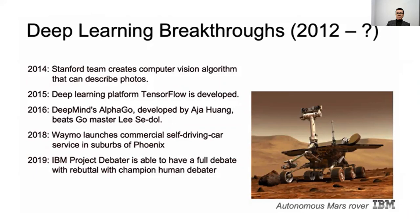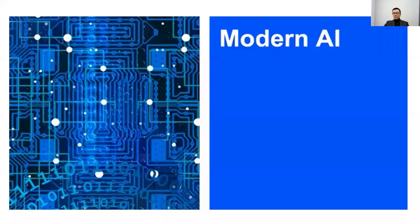In 2016, DeepMind's AlphaGo beat Go Master Lee Sedol. In 2018, Waymo launched a commercial self-driving car service in the suburbs. In 2019, IBM Project Debater was able to hold a full debate with a champion human debater.